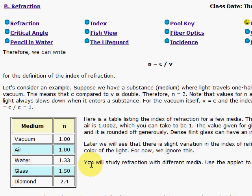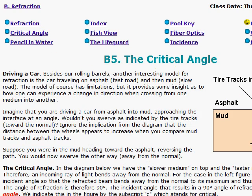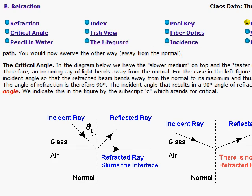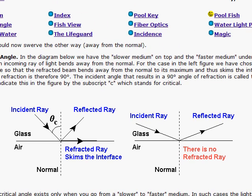So we go to critical angle, and the critical angle is found for cases where you go from a greater index of refraction to a lesser one. Glass has a greater index of refraction compared to air. So the light bends away from the normal, and you can bend away so much if this angle of incidence is big enough, then you skim the surface, and when you do that, you have a refracted ray of 90 degrees, the maximum possible refracted degree case, and the angle of incidence is considered, by definition, the critical angle.